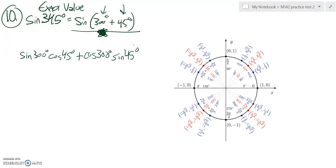So now all I have to do is figure out what these are. And so I'm going to use 300 degrees and 45 degrees. So sine of 300 degrees is negative root 3 over 2. Cosine of 45 is root 2 over 2. That's going to be added to cosine of 300 is 1 half. Sine of 45 degrees is root 2 over 2.